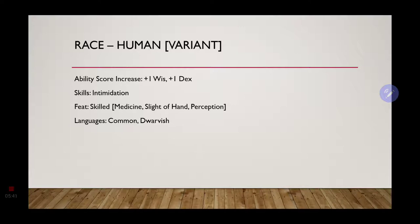Our ability score increase is only going to be wisdom and dexterity. The skill we will acquire from the variant human is going to be intimidation. Gordon Ramsay is a very intimidating being. Just being around him causes fear. Now for the feature that the human variant allows, we are going to go with the skilled feat. This will give us three different proficiencies to choose from. We are going to do medicine, sleight of hand, and perception.